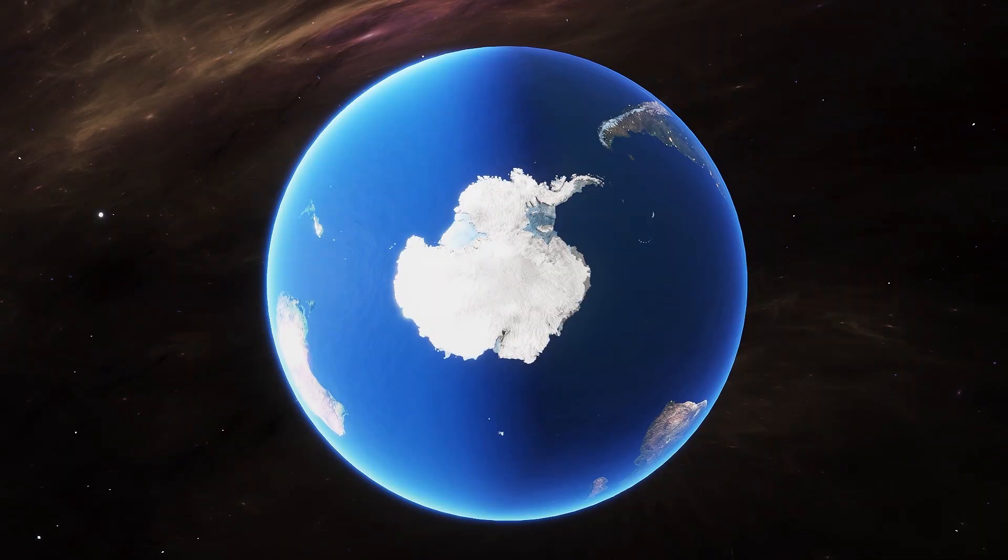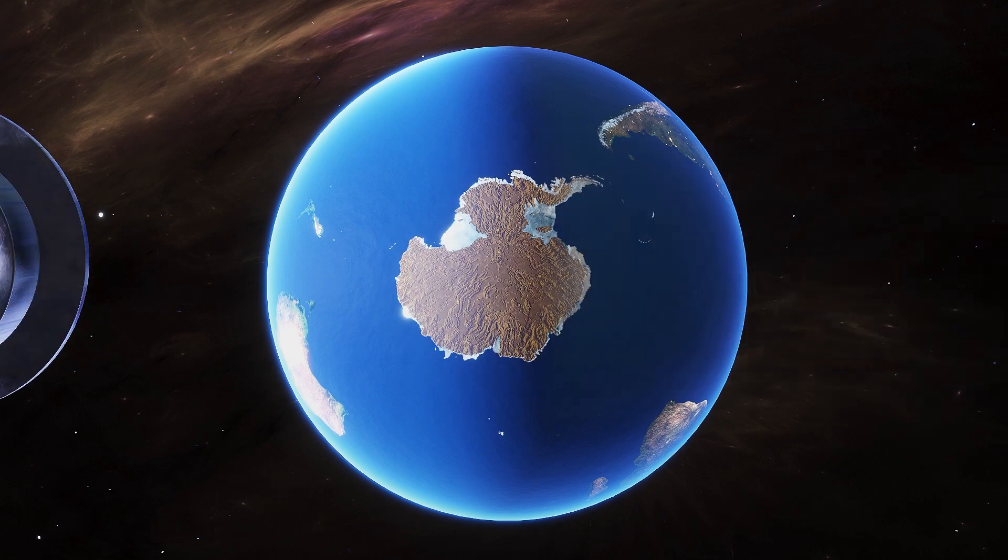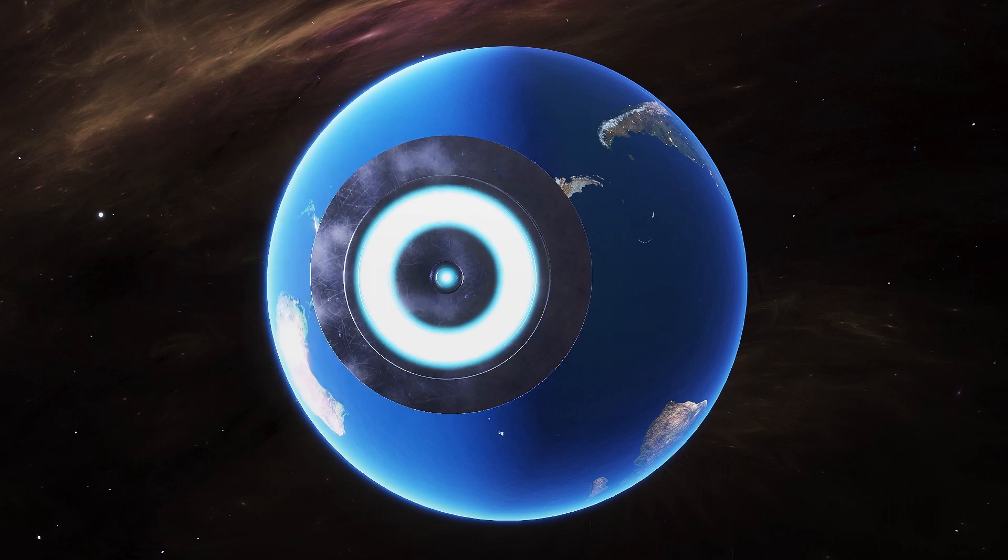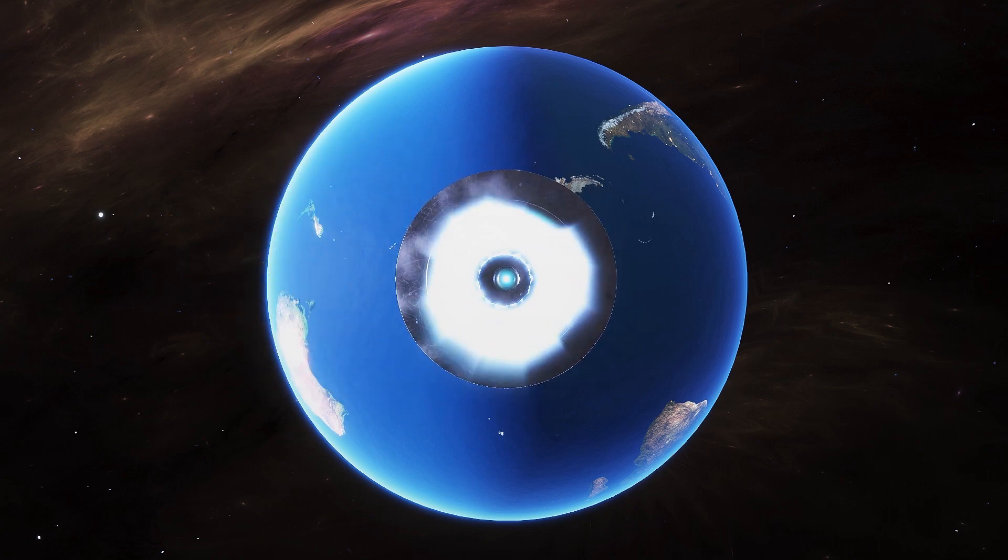The thruster itself would be built at the south pole, where it would not interfere with the Earth's existing direction of motion and could, over millions of years, propel the Earth to a greater and safer orbital distance from the Sun.